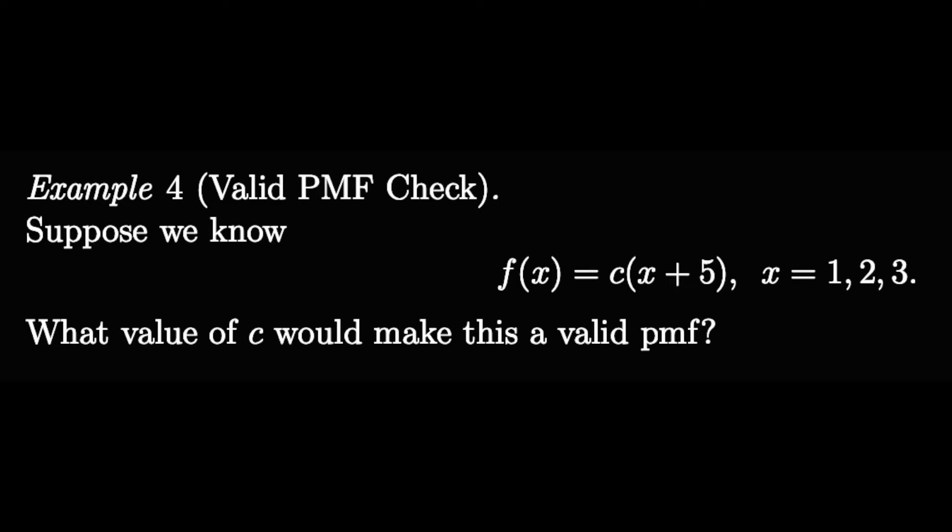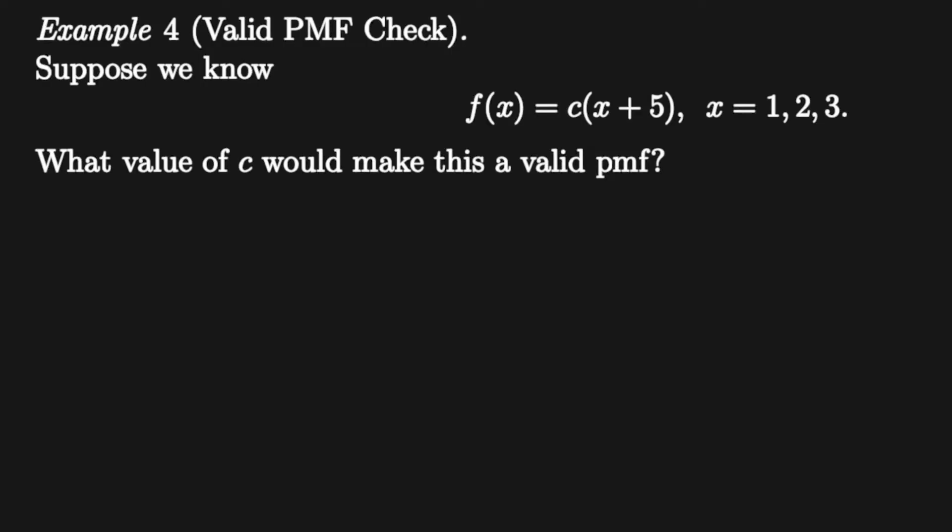So let's get on with this. Now we can write this as one is equal to the summation over x of f of x, where we can rewrite this as one is equal to the summation from x equals one to three of c times x plus five.